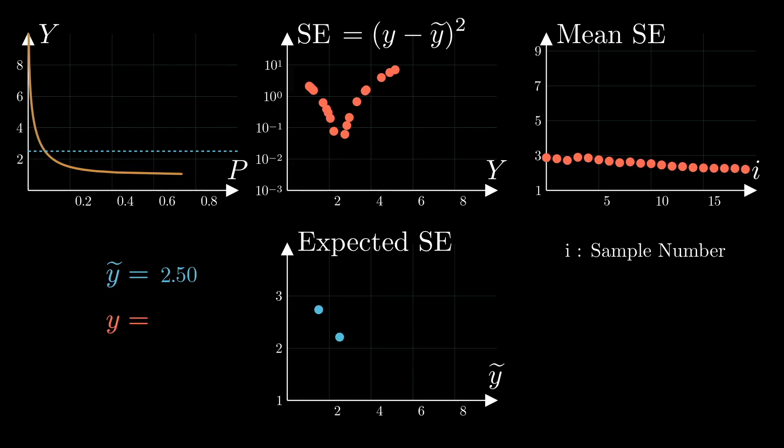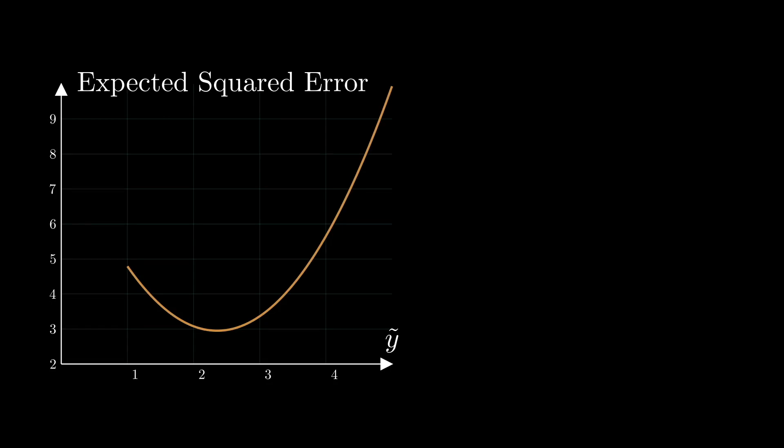If you do the same process for a sufficiently large number of y tildas and samples, you will get a plot like this, which again shows the expected value of the squared error as a function of different points belonging to the distribution.